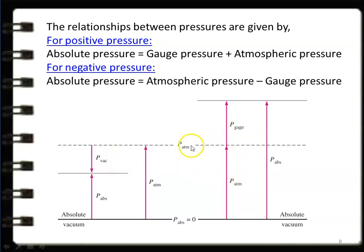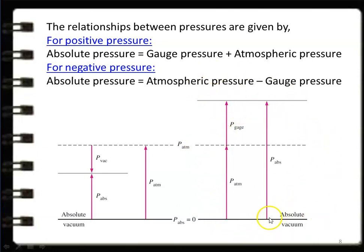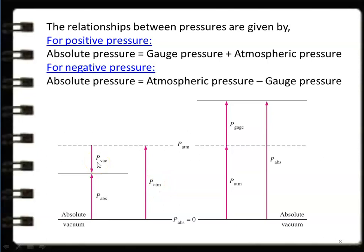Looking at the diagram: this is atmospheric pressure. Pressure above atmospheric pressure is gauge pressure, so absolute pressure equals atmospheric pressure plus gauge pressure. For negative pressure, atmospheric pressure equals absolute pressure plus vacuum pressure, or absolute pressure equals atmospheric pressure minus gauge pressure or vacuum pressure.